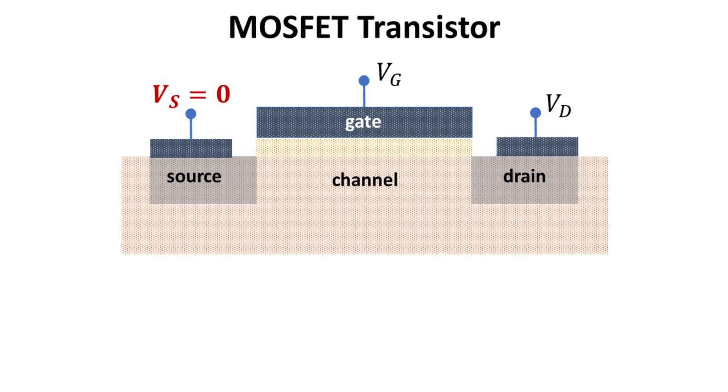By convention, we set Vs to be our reference voltage, or Vs equals zero, and the current that flows between the source and drain contact is denoted as ID.